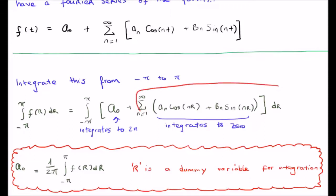Note that this set of terms here integrates to 0, and this term here integrates to twice pi. Rearranging, we get the functional form of a sub 0 down here.